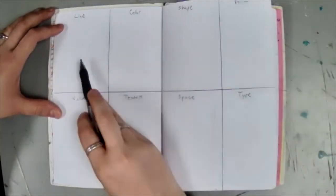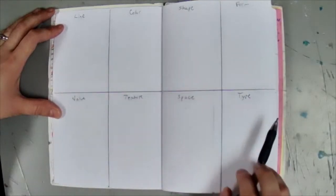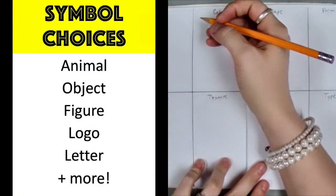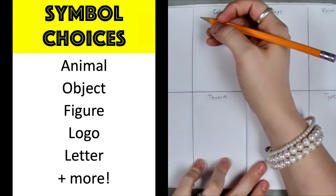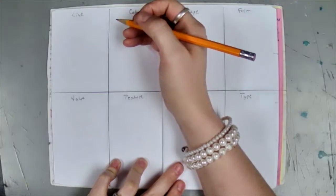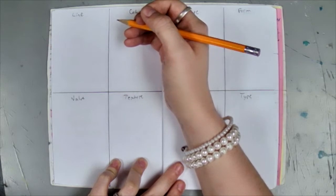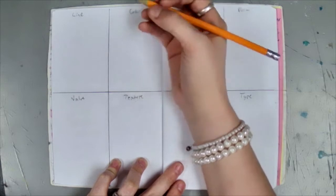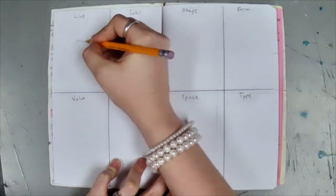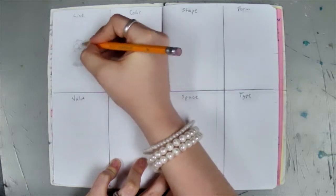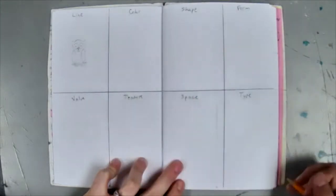Once you have all your boxes labeled, then it's just a matter of drawing your pictures inside of them. Remember, your picture is your symbol that is either an animal, object, a figure, a logo, or a letter, or anything else that you really want. What you'll need to do is draw your symbol — something simple as a silhouette, meaning it's just an outline — very lightly across all of the pages. I'm going to draw a very simple owl sitting on a branch, and then repeat this over each one.